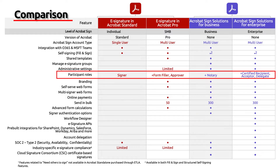Let's have a look at the roles that participants can have when signing documents. In Acrobat Standard, you can only be a signer. In Acrobat Professional, you have the ability to be a form filler — meaning you can fill in the document before sending it for signature — or you could be an approver. The difference between an approver and a signer is that a signer needs to have a signature field applied, whereas an approver is just monitored as an approver in the audit report.